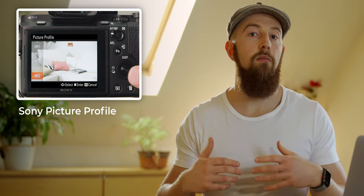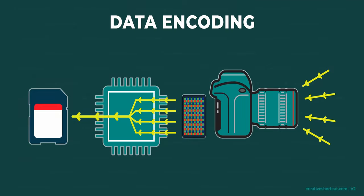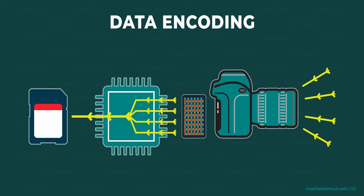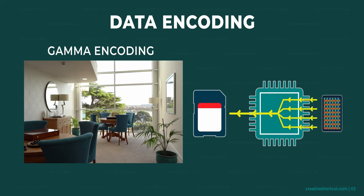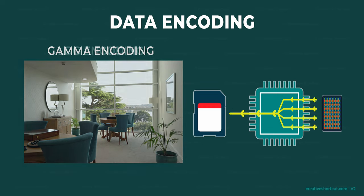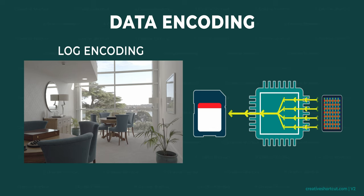I will be using Sony for examples, but the fundamentals are the same. So how does this work and what do we choose? The process of taking your data from sensor to storage is known as encoding. There are two main categories for this: gamma encoding, which results in a standard image that's ready to go, and log encoding, resulting in an image that's much flatter and looking far too grey, lacking in colour to be used immediately.